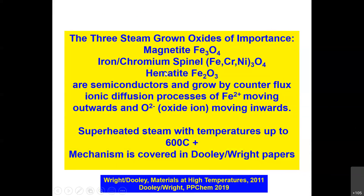These oxides are semiconductors and grow by increasing thickness through a counterflux ionic diffusion process, where iron ions move from the tube material to the outside interface, and the O2-minus ions — the oxide ion — move inwards and grow oxide on the metal surface. The latest information is provided in reference papers available on the HF website.